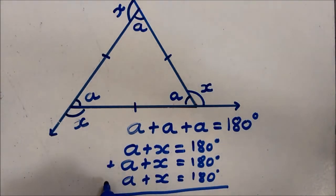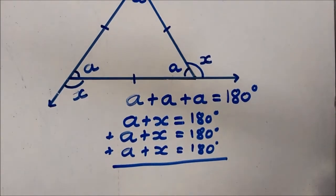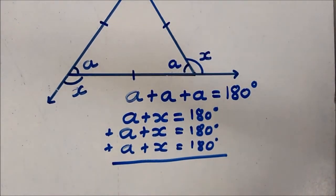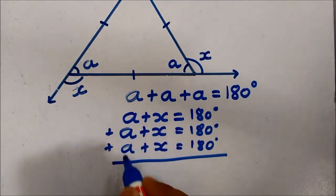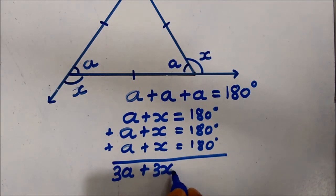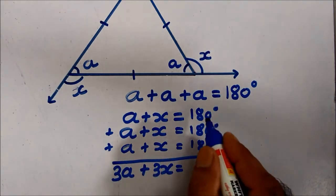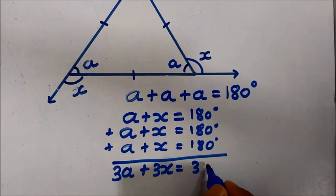Now let's add all the left hand side and right hand side. So A, A, A, that is 3A plus 3x. This is nothing but 3 times, 3 times 180 degree.